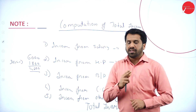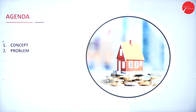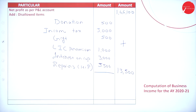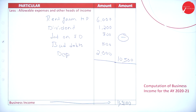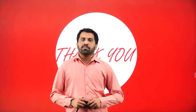This is all about today's session. You can take a screenshot of the P&L account, adjustments, and the answer in parts. The final answer — computation of business income — is the required portion. The total income computation is an extension and not required. Please work out at home. Thank you.